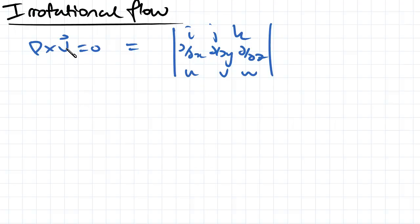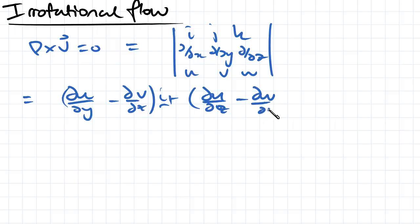Now if we expand all that out, what we get is partial w dy minus partial v dz i plus partial u dz minus partial w dx j plus partial v dx minus partial u dy k.